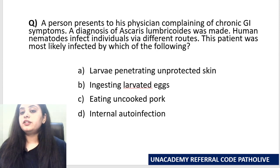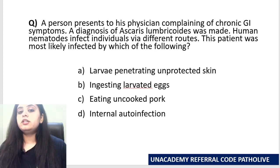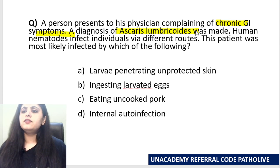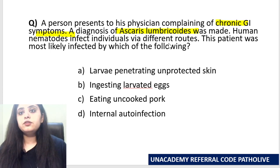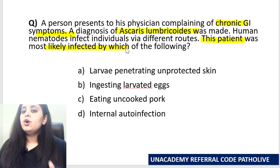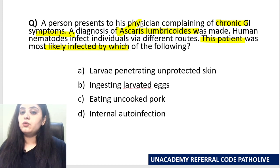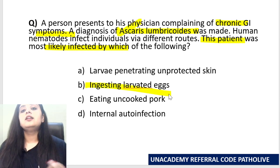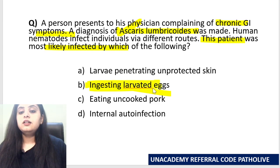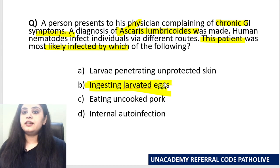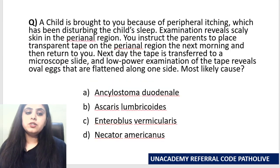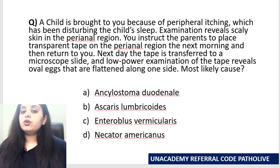Here's a question: A person presents with chronic GI symptoms and a diagnosis of Ascaris lumbricoides is made. Given that human nematodes infect by different routes, by which route was this patient infected? The answer is the larvated eggs — that is, the embryonated eggs — which is the infective form for Ascaris (roundworm).